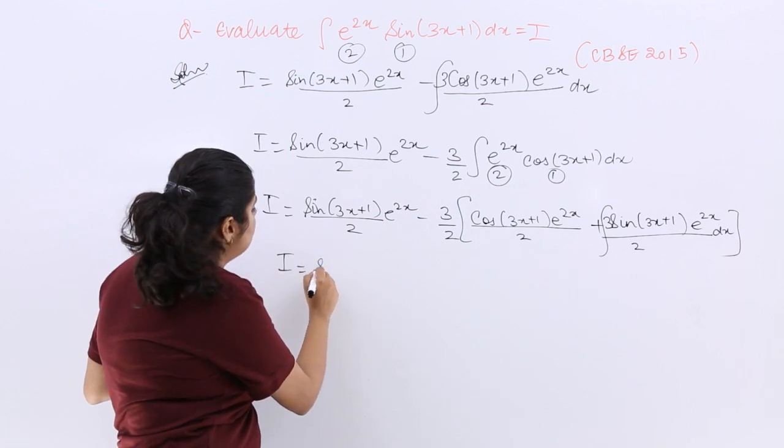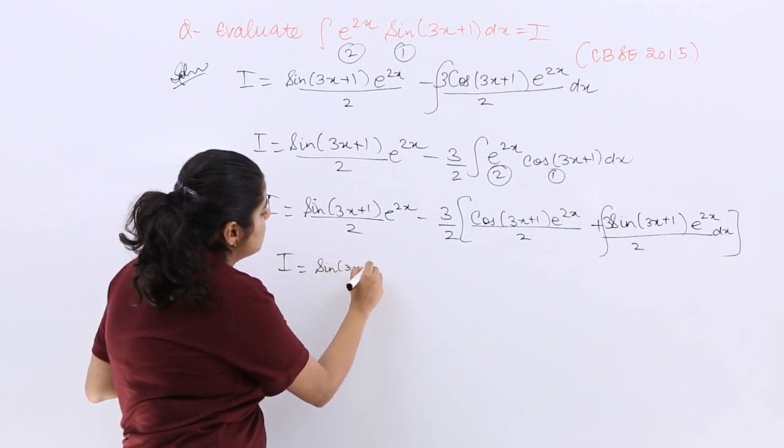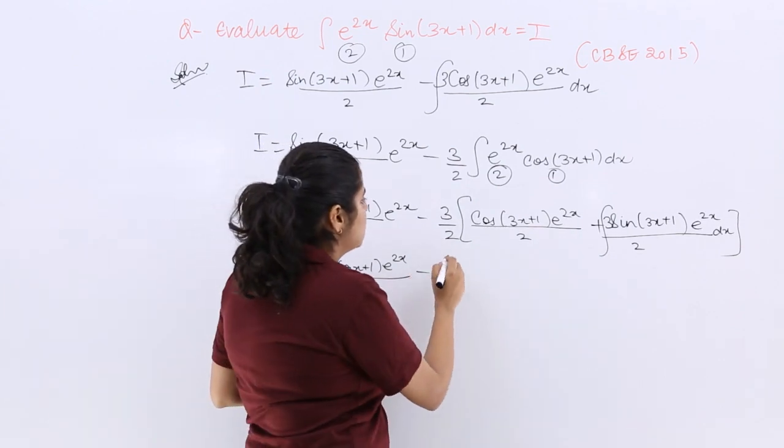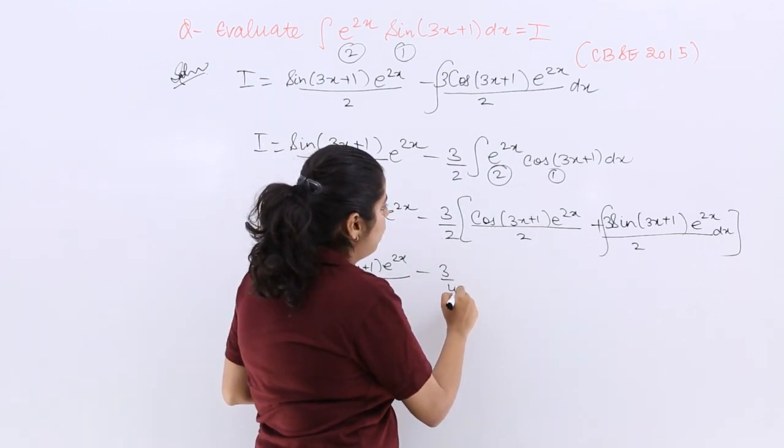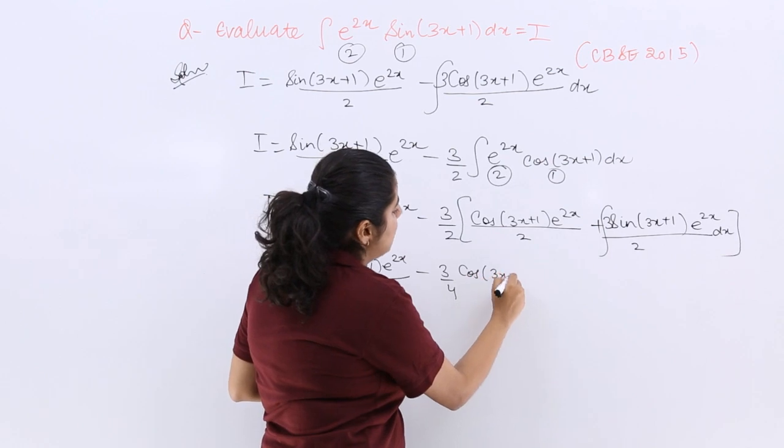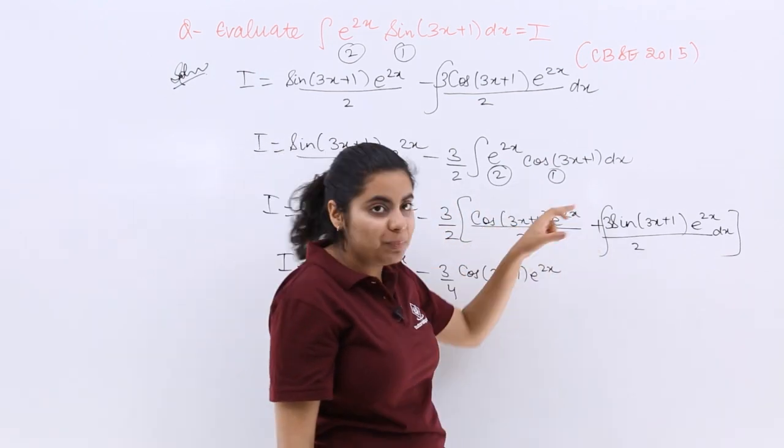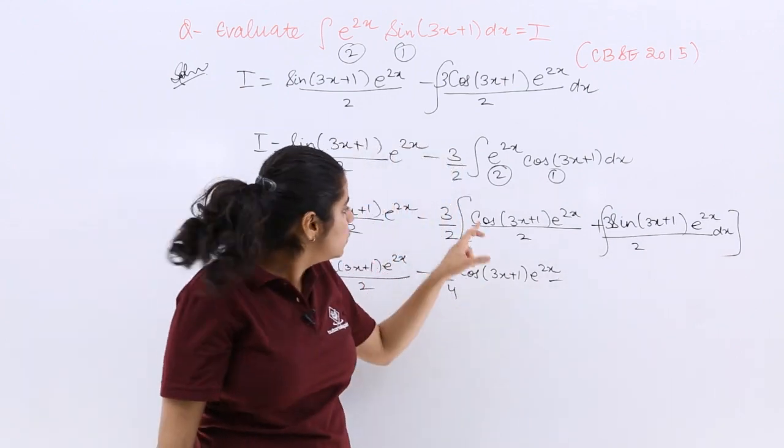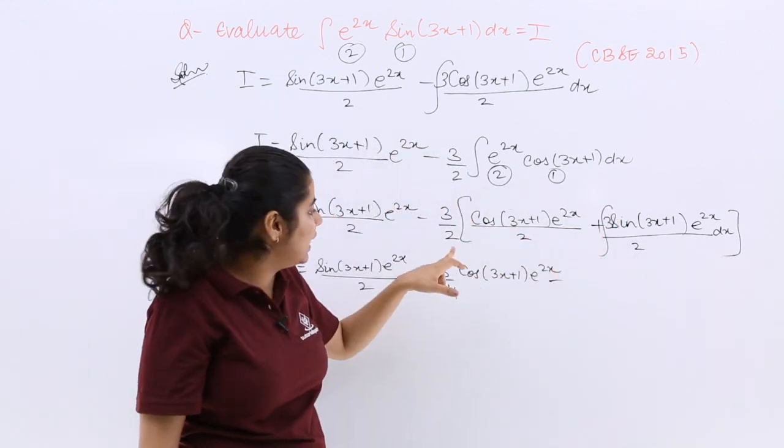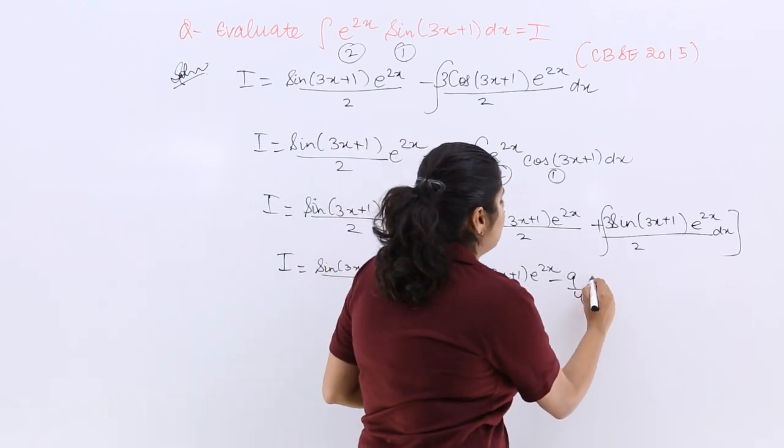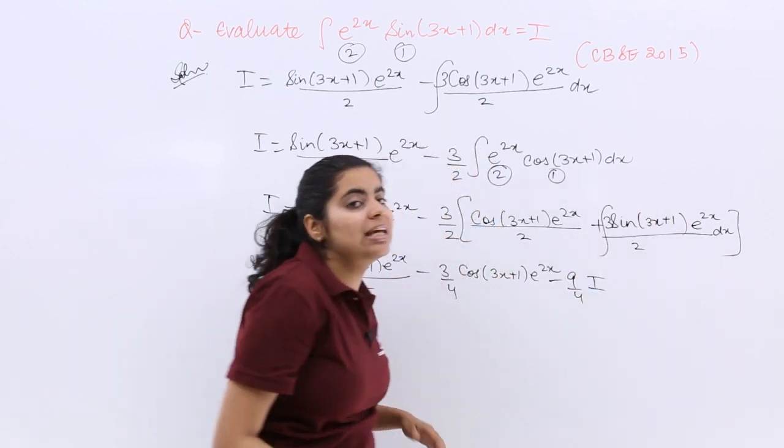So here, I is equal to sin(3x+1) e raised to the power 2x upon 2 minus 3 by 4 cos(3x+1) e raised to the power 2x. Now minus and plus would make it minus, 3 and 3 would make it 9, 2 and 2 would make it 4. So minus 9 by 4I.